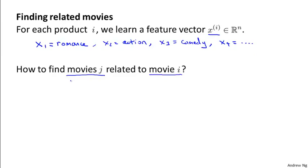Well, why would you want to do this? Maybe you have a user that's browsing movies and they're currently watching movie J. Then what's a reasonable movie to recommend to them to watch after they're done with movie J? Or if someone's recently purchased movie J, well, what's a different movie that would be reasonable to recommend to them for them to consider purchasing?